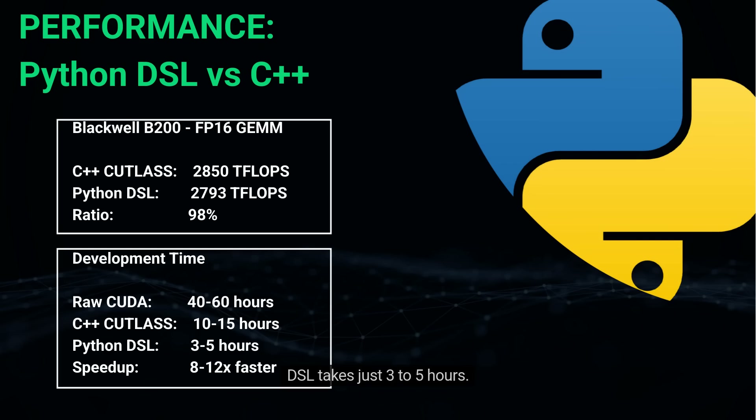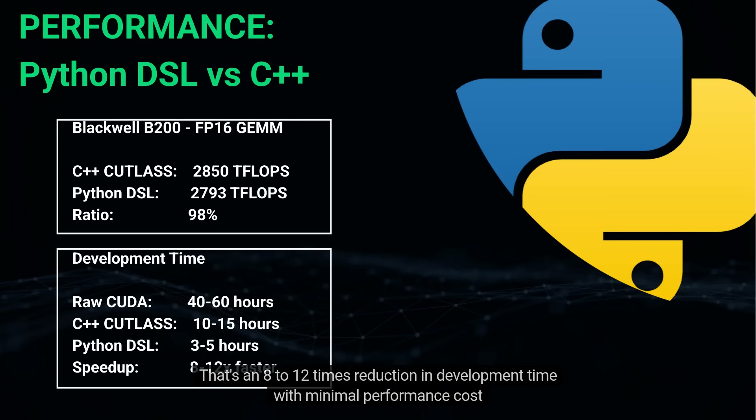But look at development time. Raw CUDA takes 40 to 60 hours; C++ Cutlass takes 10 to 15 hours; Python DSL takes just 3 to 5 hours. That's an 8 to 12 times reduction in development time with minimal performance cost.